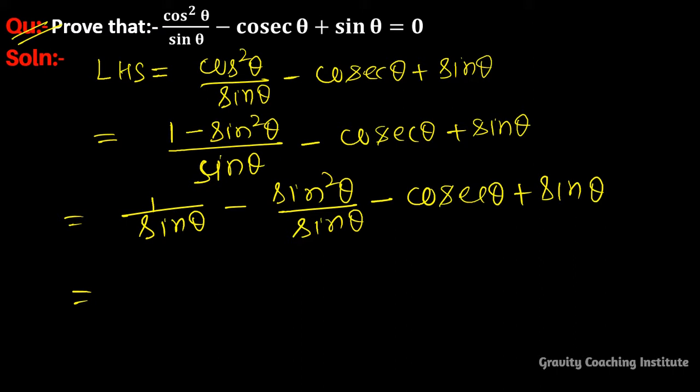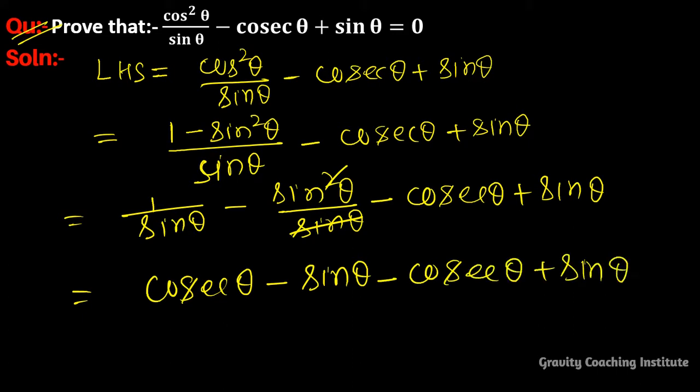And we know that the identity of 1/sinθ equals cosecθ. Here, sin²θ and sinθ cancel, so we get sinθ - cosecθ + sinθ.